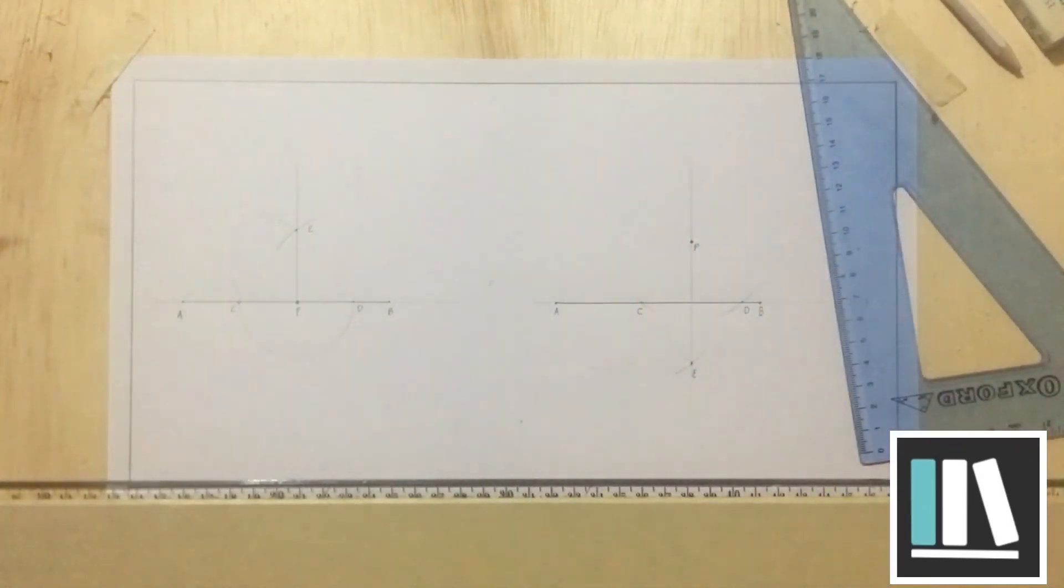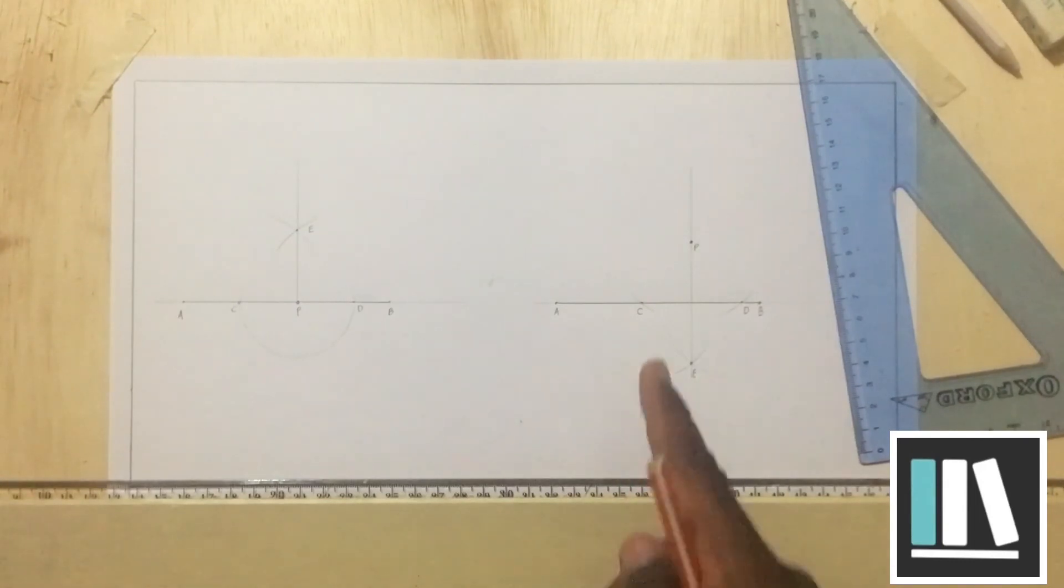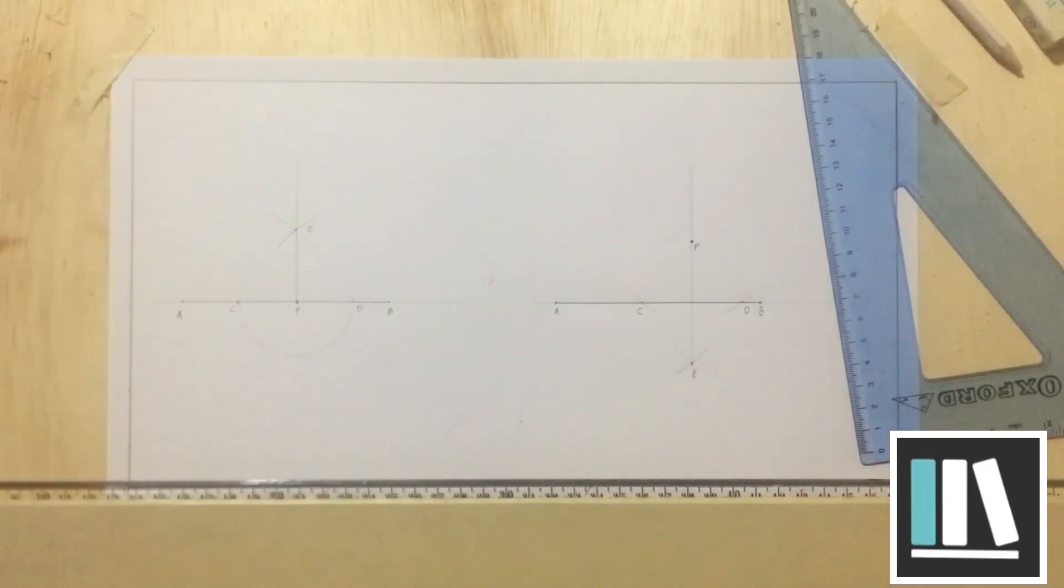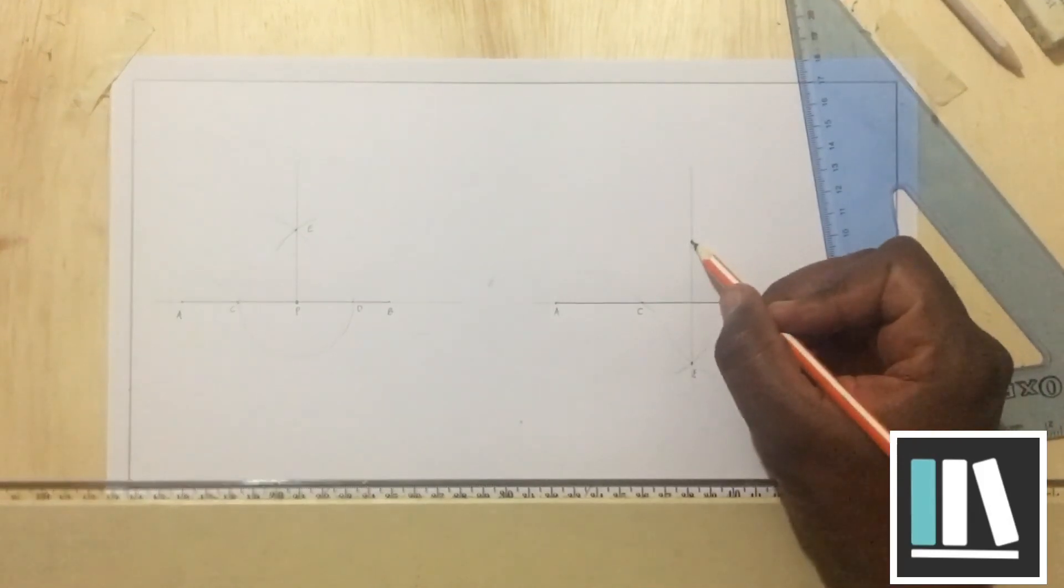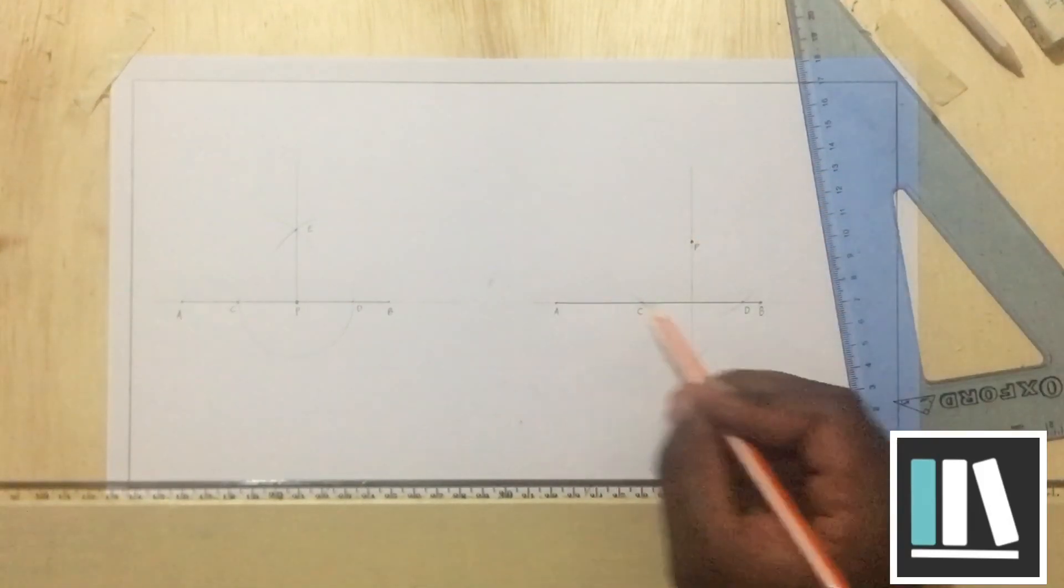Here you have it, a line that is perpendicular to another line that is passing through a point P that is outside of the original line.